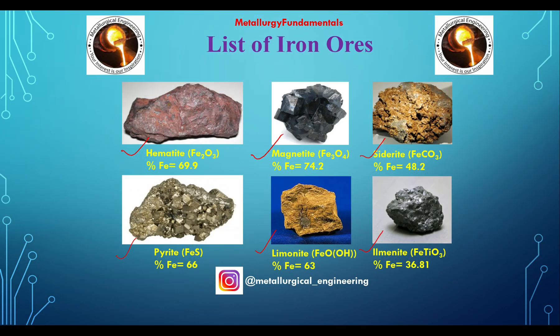For iron ores, hematite and magnetite are the two most important. Specifically, in the blast furnace for iron making, hematite is used. This concludes the list of the most important ores for different metals.